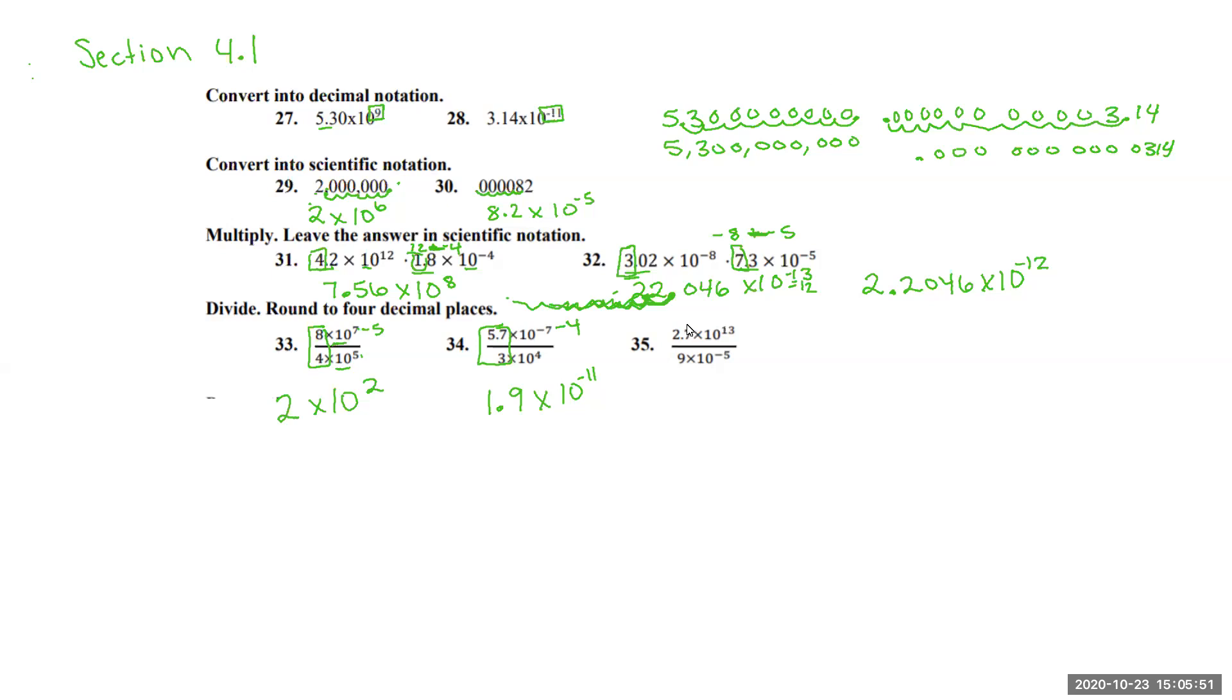And then our last one here, we're going to do 2.7 divided by 9, which is going to give us 0.3. And then we're going to do 13 minus negative 5 for our exponents of 10. Of course, when we do negative negative, it's going to turn into a positive here, which will give us 10 to the 18th.